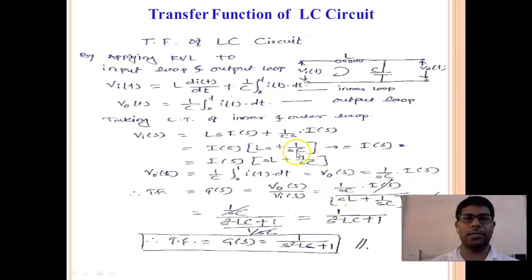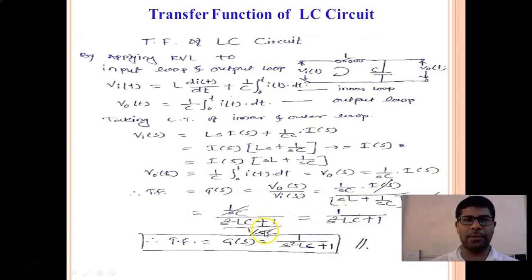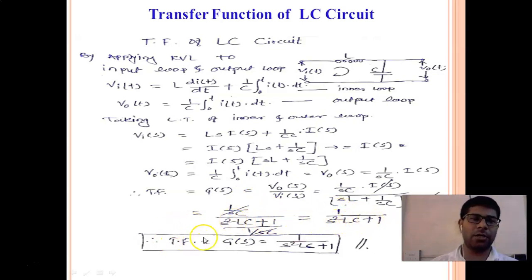Now we derive the transfer function as the ratio of Laplace transform of output to Laplace transform of input: V₀(S)/Vᵢ(S). V₀(S) is 1/(SC)·I(S), and Vᵢ(S) is I(S)·[SL + 1/(SC)]. The I(S) terms cancel. Doing cross multiplication — SC × SL gives S²LC, plus 1 — and the SC terms cancel, giving the final transfer function: G(S) = 1/(S²LC + 1).